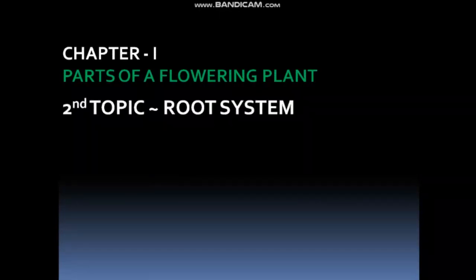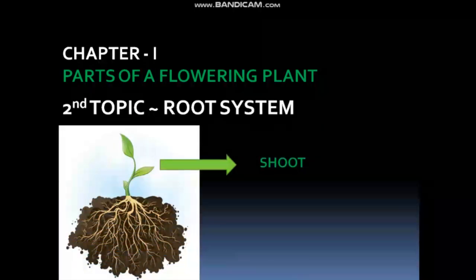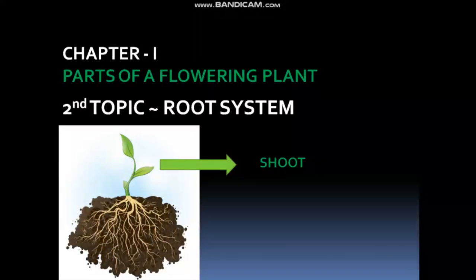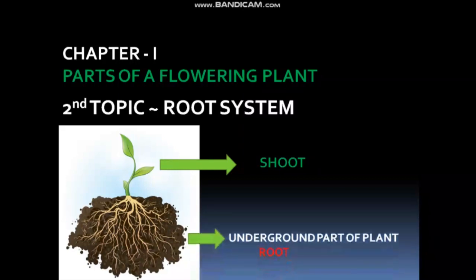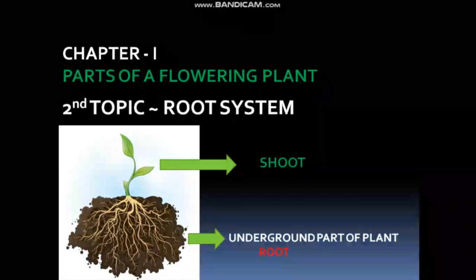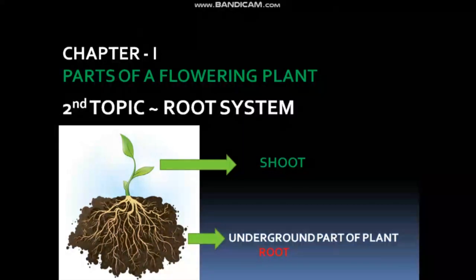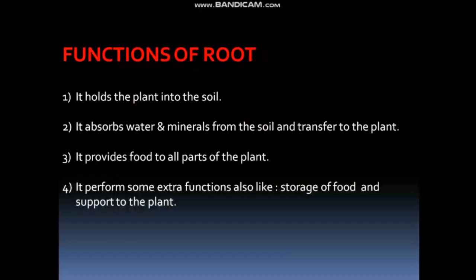If you have seen a plant carefully, you might have noticed that it is basically divided into two parts. The part which is above the ground is known as the shoot, and the part which is below the ground is the root.